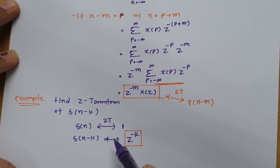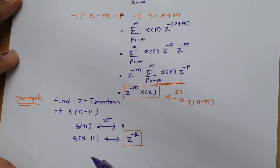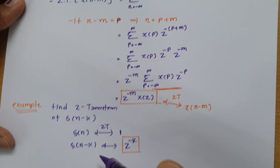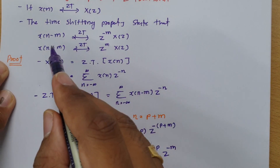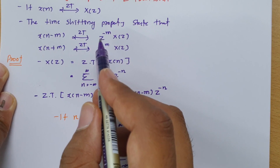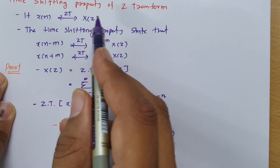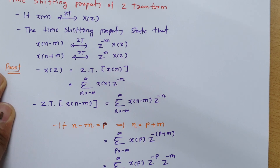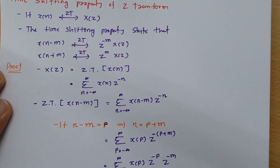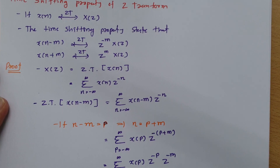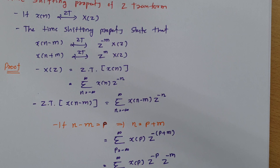So this is how we can use the time shifting property of z-transform. In many more examples, you will be using this property. One should remember: if you have signal x of n minus m, then the z-transform has to be z to the power minus m into x of z, where x of z is the z-transform of x of n. That is how we can utilize this property to find solutions. I hope you understood this session. Please do give your valuable suggestions — based on them, I will make videos to solve your queries. Thank you so much for watching.